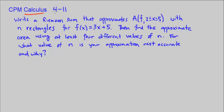This is CPM Calculus Chapter 4, Number 11. We're asked to write a Riemann sum that approximates the area under our curve F between F and the x-axis from 2 to 5 with n rectangles for the function f(x) = 3x + 5. Then we want to actually plug in and approximate the area using at least four different values of n. Then we want to answer the question: for what value of n is your approximation most accurate and why?